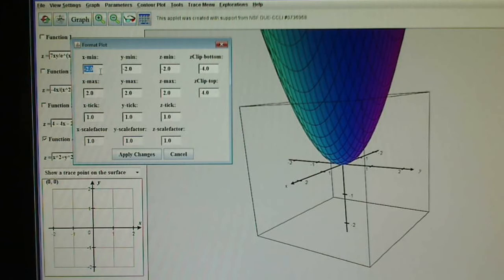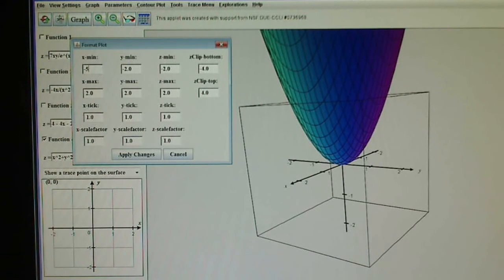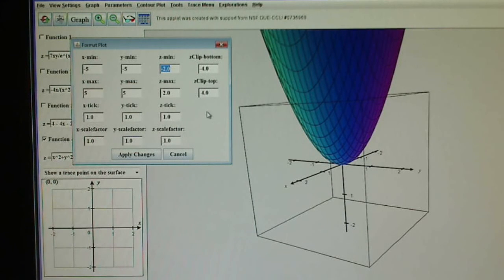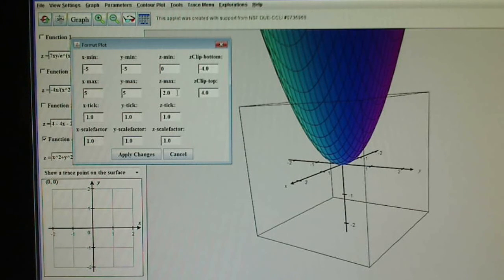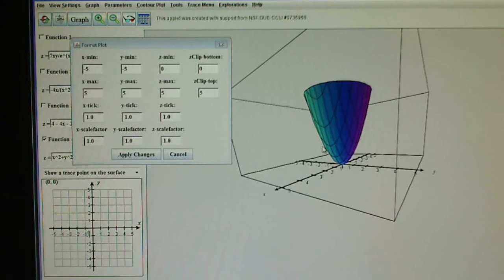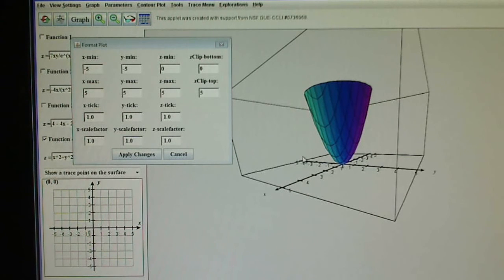I'm going to try minus 5 to 5, minus 5 to 5. And then, because I know there's a paraboloid and everything's going to be above the XY plane, I'm going to have that Zmin as 0 and my Zmax also at 5. I'm going to make my clips the same. So, 0 and 5. Apply changes. You can see you have a much better looking picture that you can manipulate.